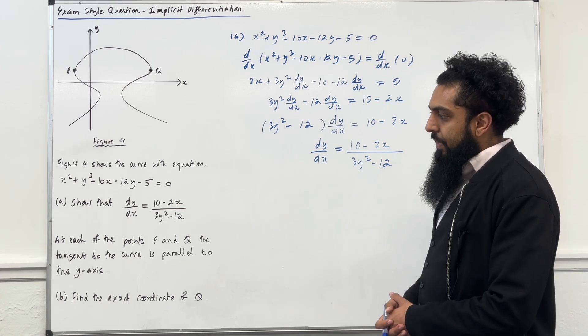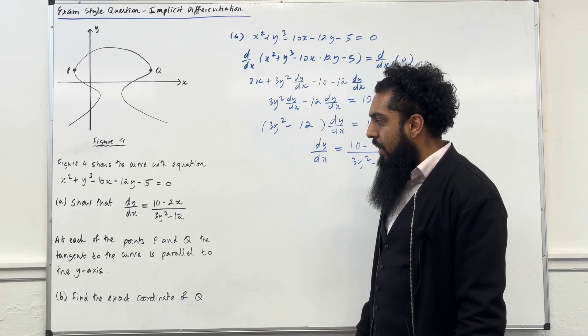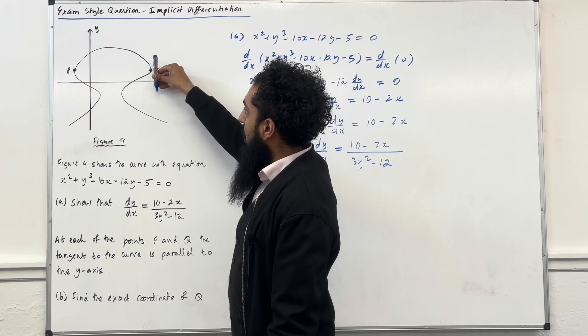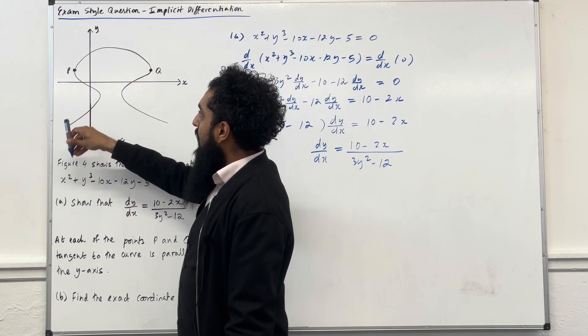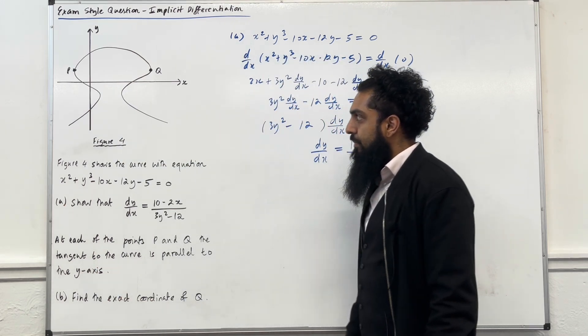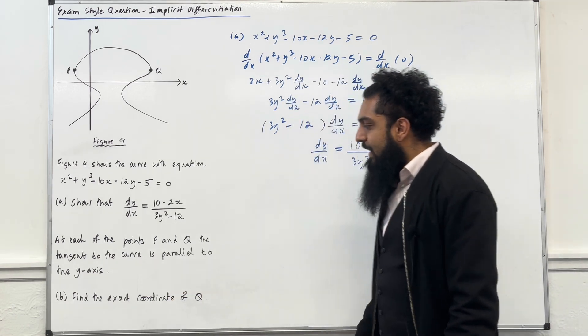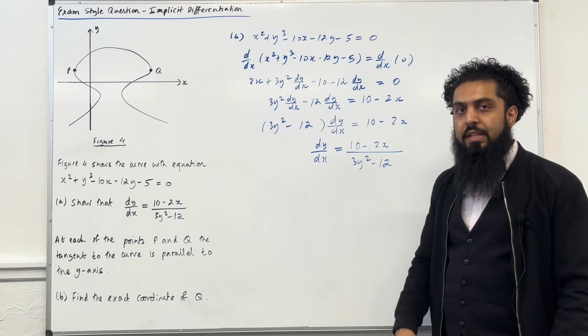Let's have a look at part B. At each of the points P and Q, the tangent to the curve is parallel to the y axis. So if I draw a tangent to the curve at the point Q, it's a vertical tangent which is parallel to the y axis. And the same applies for the tangent to the curve at the point P. Part B, find the exact coordinate of Q. Please pause the video, have a go at part B, then play the video.